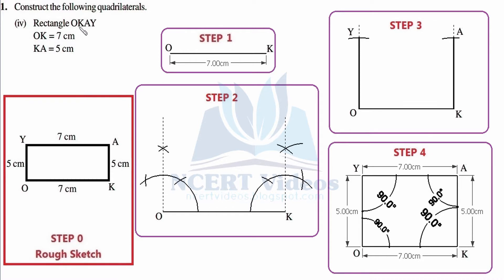OK is continuous, therefore this must be one side of this rectangle equal to 7 centimeters. Then KA is continuous, therefore it must be another side of this rectangle equal to 5 centimeters. Since it is a rectangle, all four angles will be equal to 90 degrees. We are given two distinct sides, meaning we have all the information required to construct rectangle OKAY.